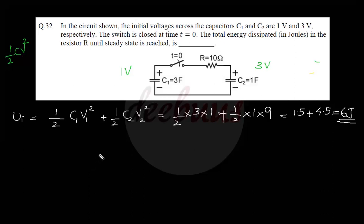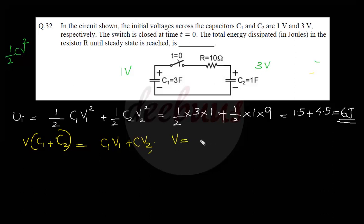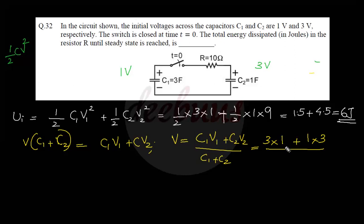In steady state, both capacitors must have equal voltages. Using charge conservation: V equals (C1·V1 plus C2·V2) divided by (C1 plus C2) equals (3×1 plus 1×3) divided by (3 plus 1) equals 6/4 equals 1.5 volts.